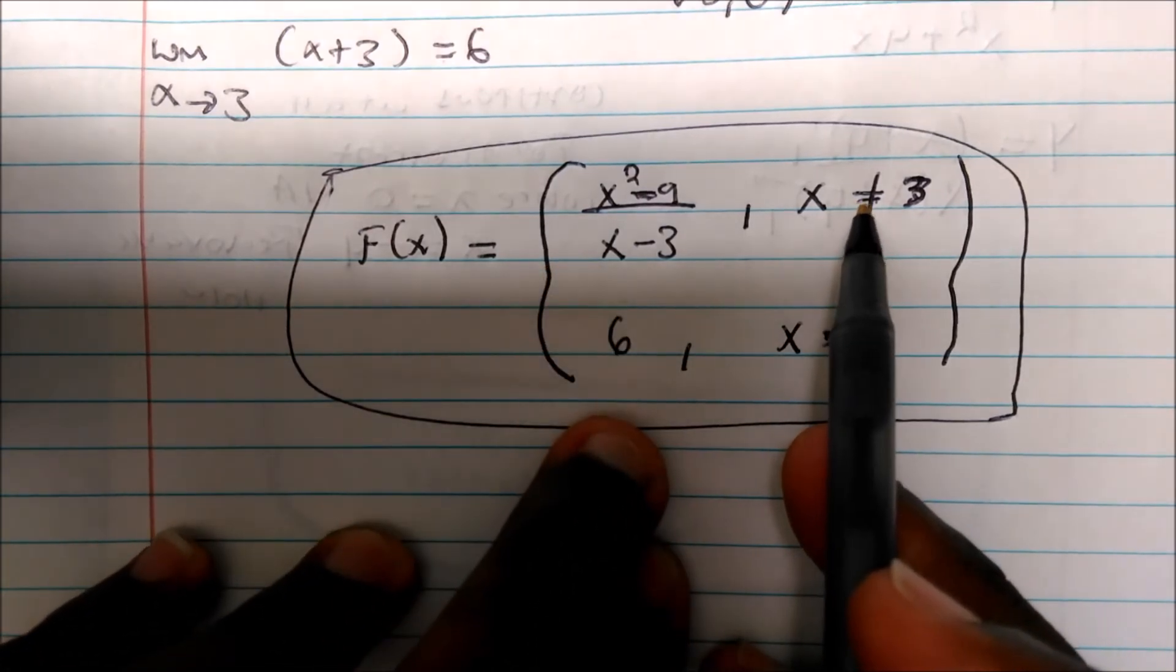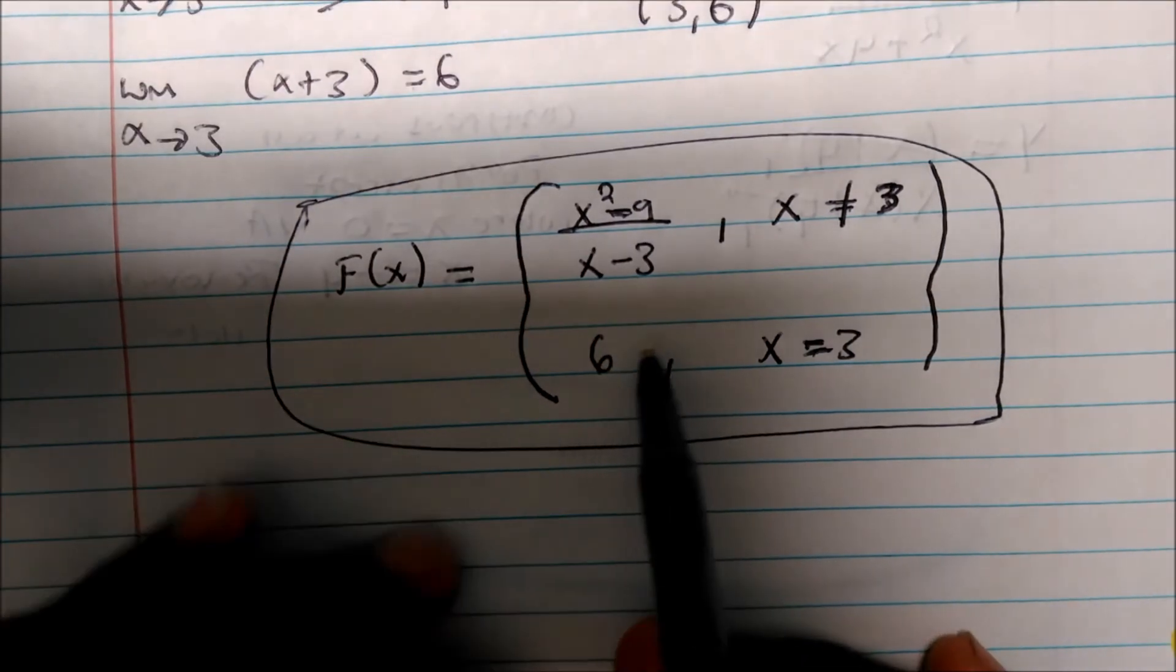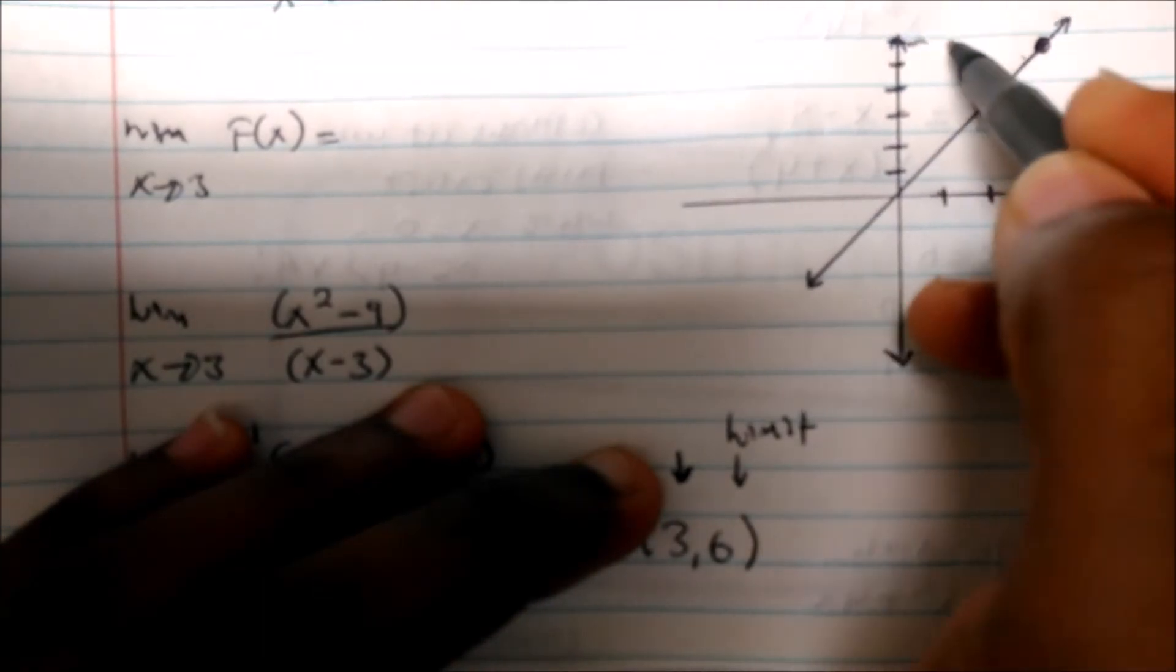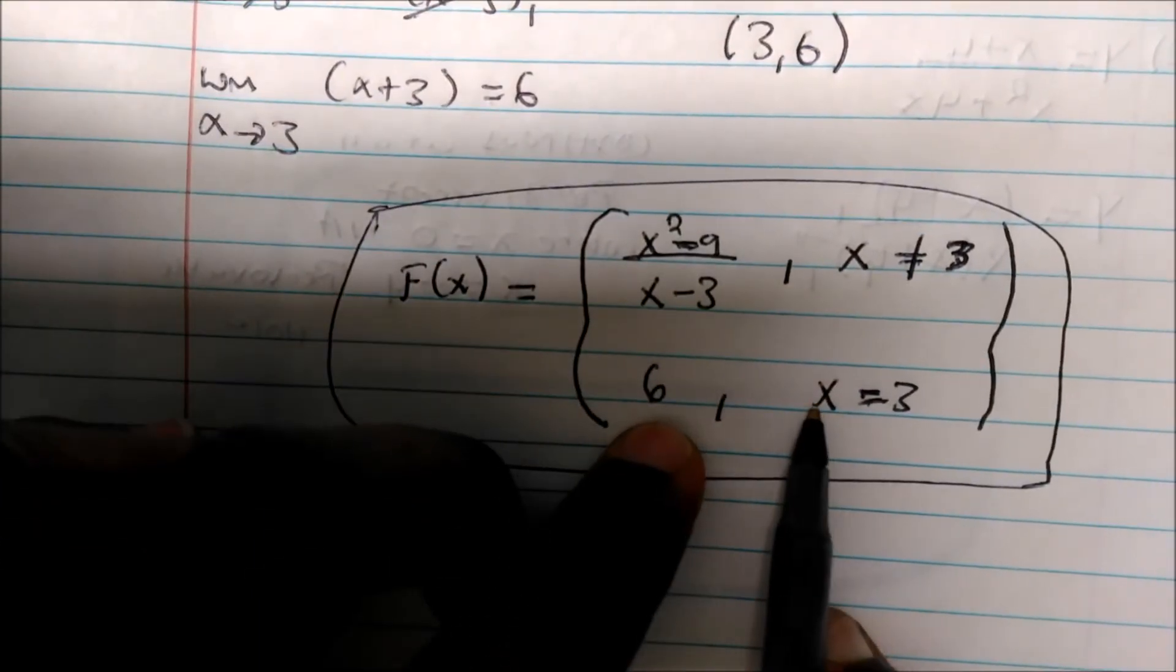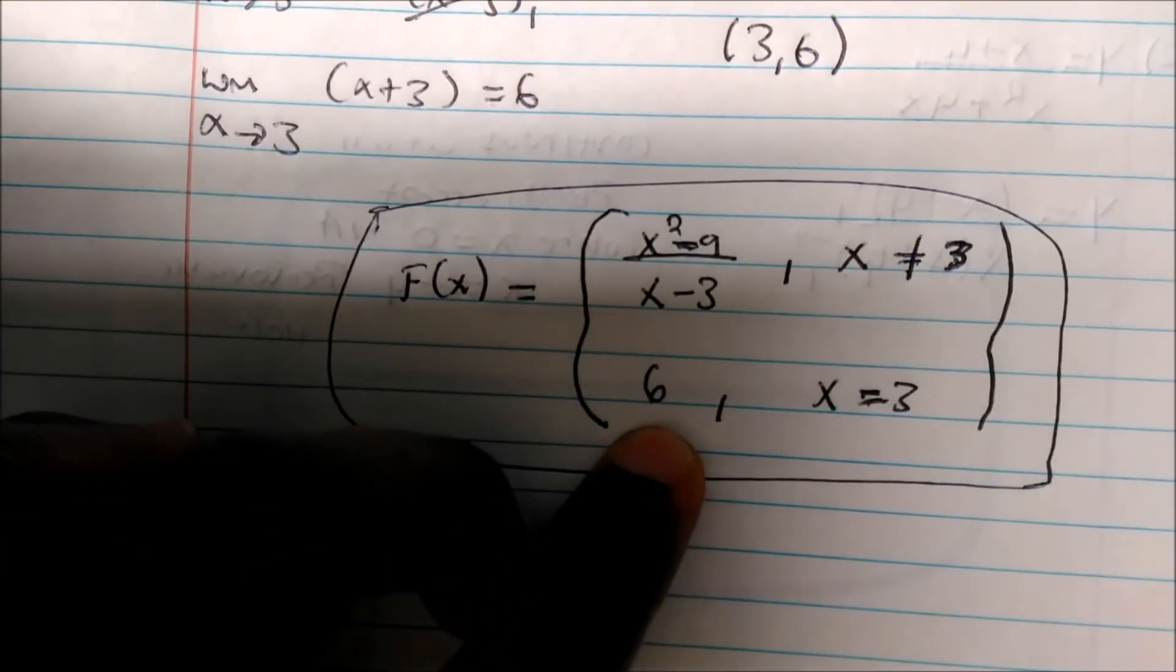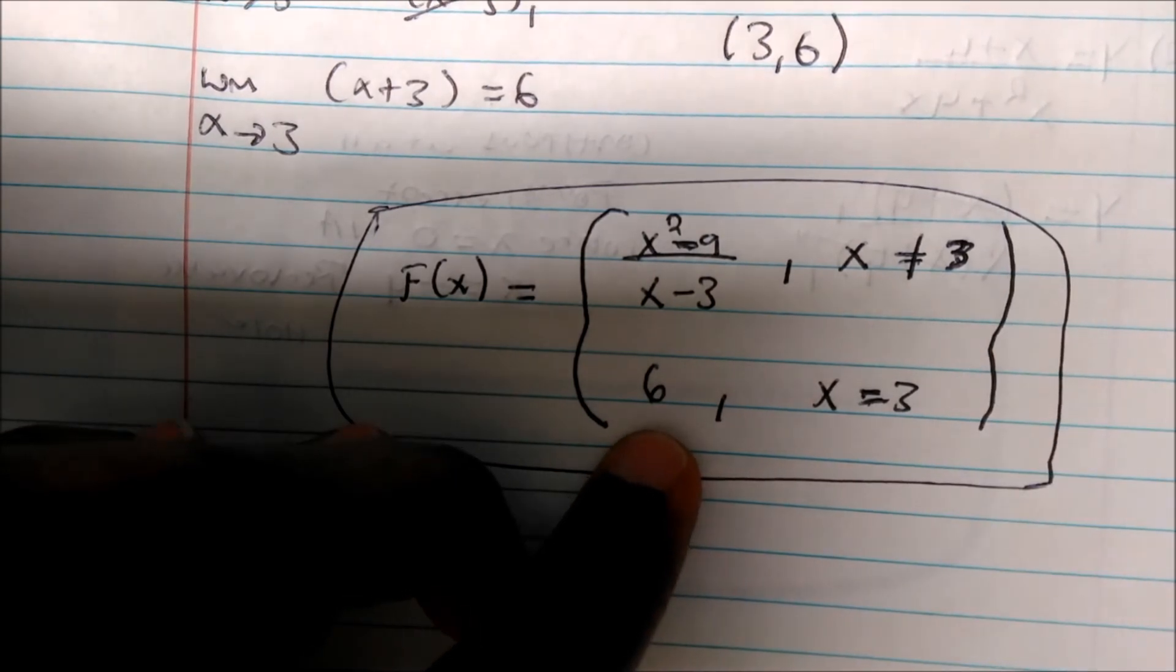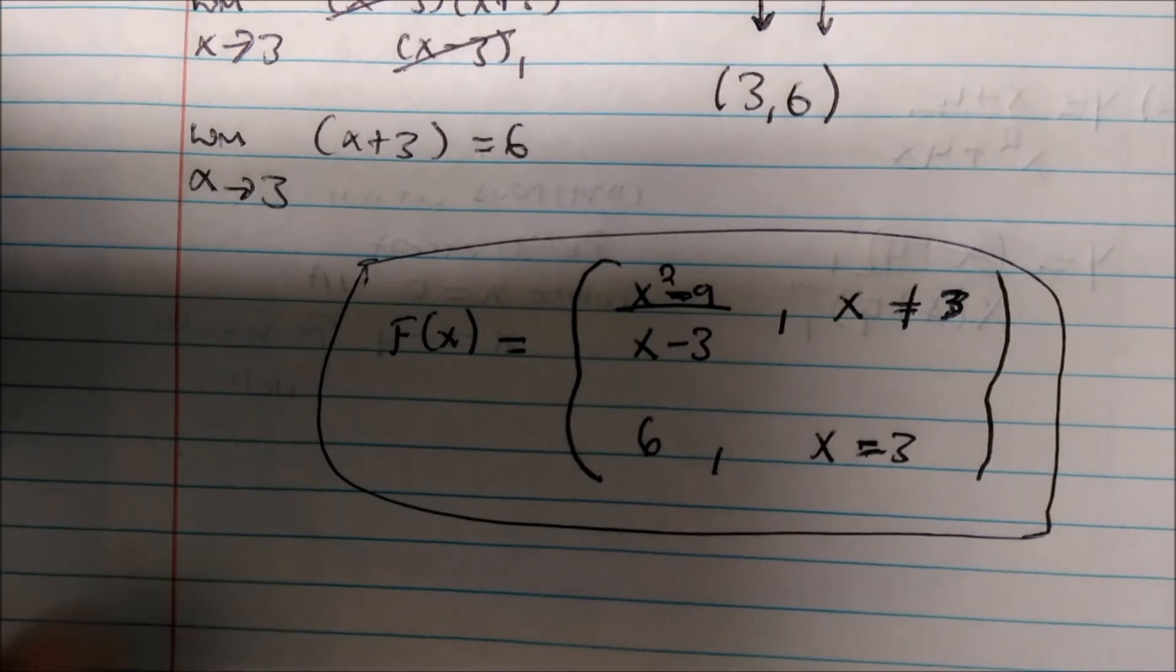Right? Well, the limit or the y coordinate is 6 where the removable hole is for the y coordinate. You see, this is actually 6. And so at 6, x is equal to 3. So we put that—that's just a point. So at x equals 3 we have 6, and so that's how you make a function continuous at a point or continuous extension.